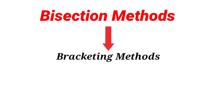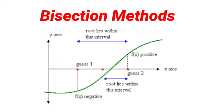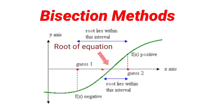What is actually the bisection method? Bisection method is one of the bracketing methods for finding the root of equations. The root of the equation is the point where the curve f(x), placed on the x and y axis, intersects the x-axis.